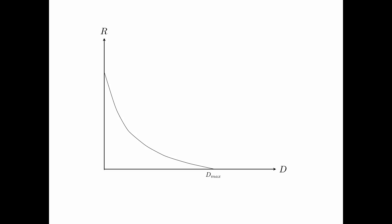The idea is illustrated in this picture. This is the rate-distortion region, which is convex. Suppose we have a pair (R1, D1) achievable by a certain code, and the pair (R2, D2) achievable by another code. We draw a line to connect the two points. The midpoint is ((R1+R2)/2, (D1+D2)/2). This pair can be achieved by using the first code for half of the time and the second code for half of the time, because the rate of the resulting code would be the average of R1 and R2, and the distortion would also be the average of D1 and D2.